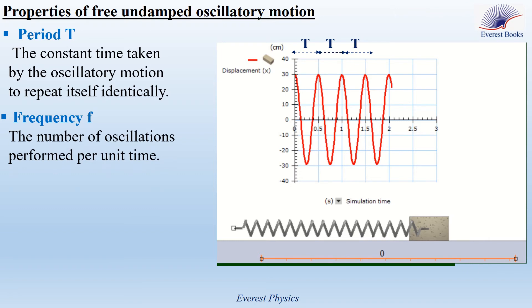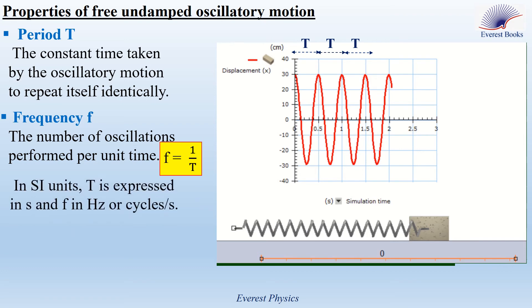The second property is the frequency, which is the number of oscillations performed per unit time. If you replace T in the formula by 0.5 seconds, the answer would be 2 hertz. Considering the graph, the block completes two oscillations in one second, so our frequency is 2 hertz.